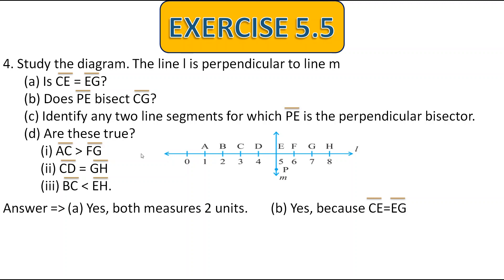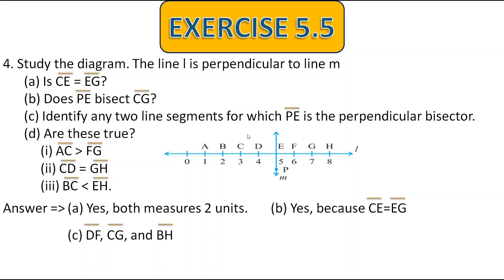Now identify any two line segments for which PE is the perpendicular bisector. Bisector means it should make half. So here I am giving you three examples. DF is making one unit on each side. CG is making two units on each side. And BH has three units on each side. So these are three examples of line segments for which PE is the perpendicular bisector.